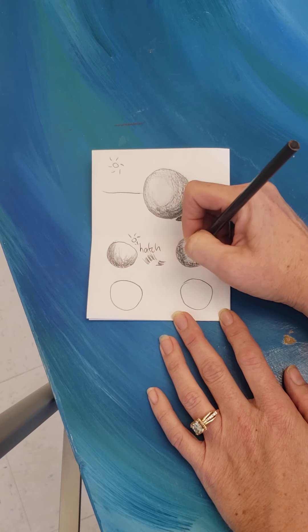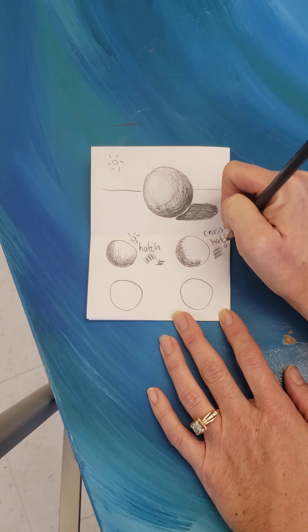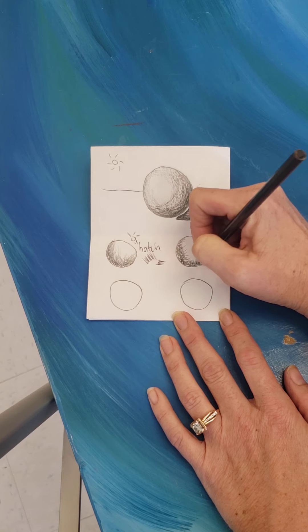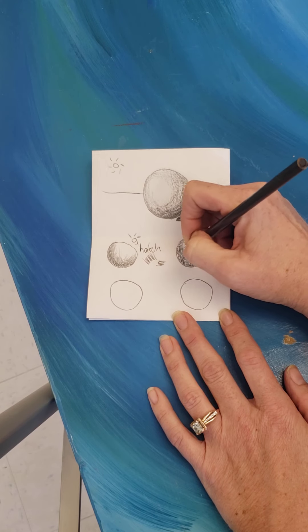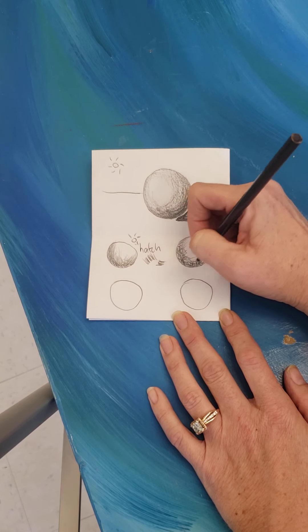And then, of course, as you get closer towards your light source, which I made over here, your hatches would get lighter. Value really involves pressure of your pencil.